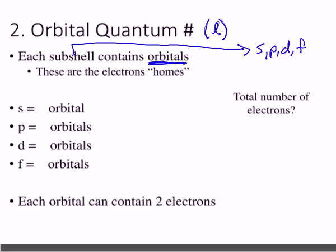The S sub-level has one orbital. This is where you start seeing one of the first patterns of the unit. The P sub-level has three orbitals. D has five, and F has seven — the pattern goes up by two every time. Orbitals can hold up to two electrons each. So S holds 2, P holds 6, D holds 10, and F holds 14 electrons total. Just double the number of orbitals to get the number of electrons.